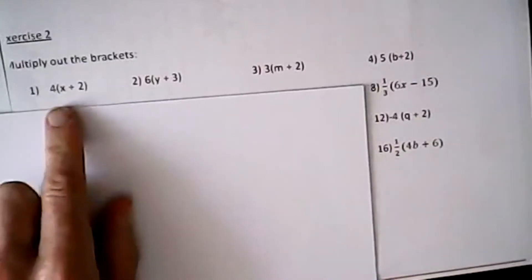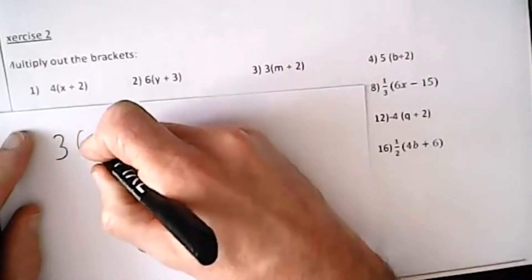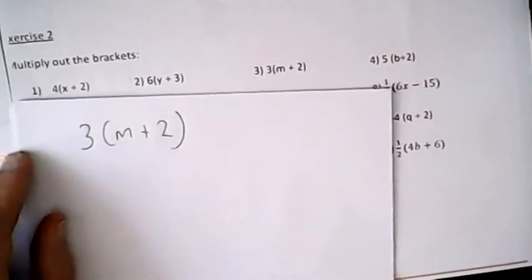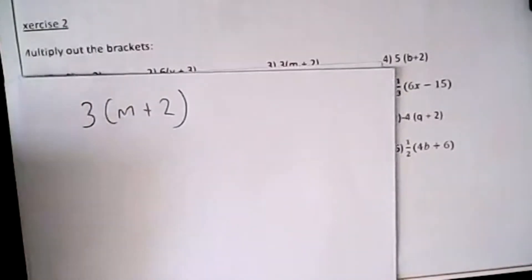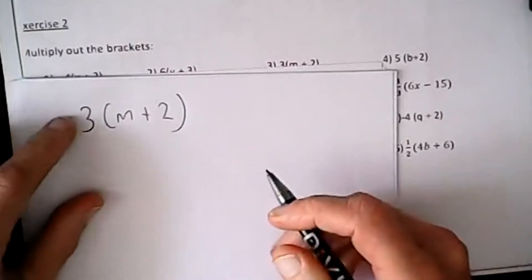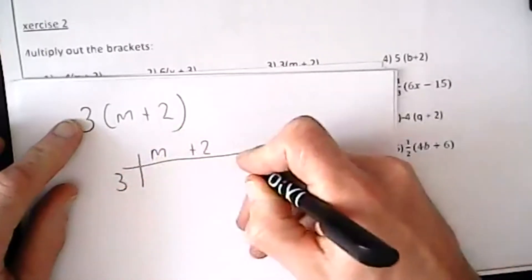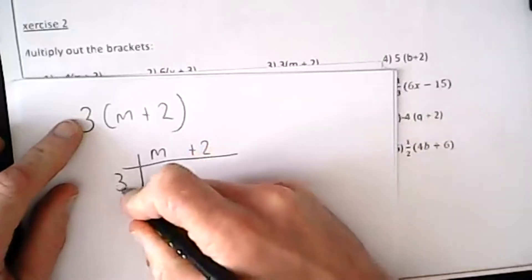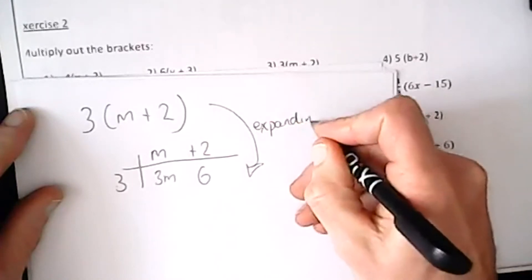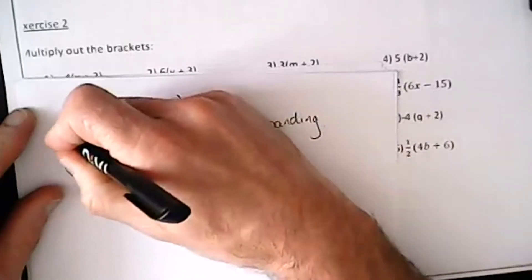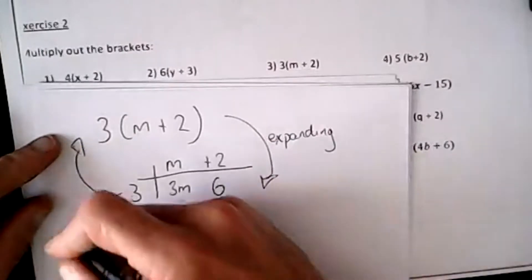Looking at question number three: three m plus two. On this process we're multiplying out. Nice and easy numbers — we can do that in our head quite easily. But remember, as these expressions become more difficult with minuses, x's, y's, and squares, it's always good to rewrite this as a grid. Three times m is 3m, three twos are six. That's expanding. Going the other way is the reverse process — that's called factorizing.